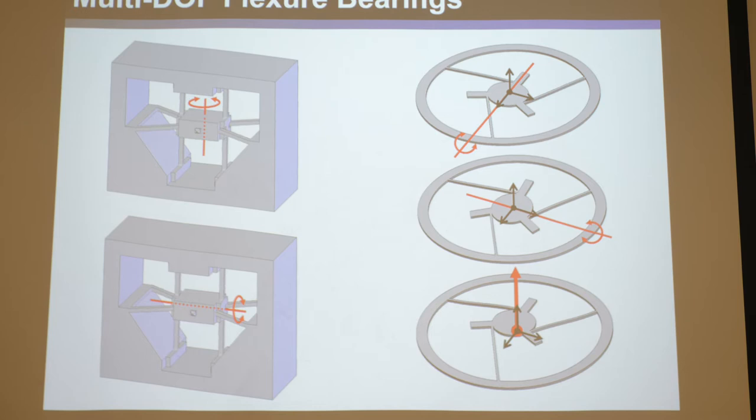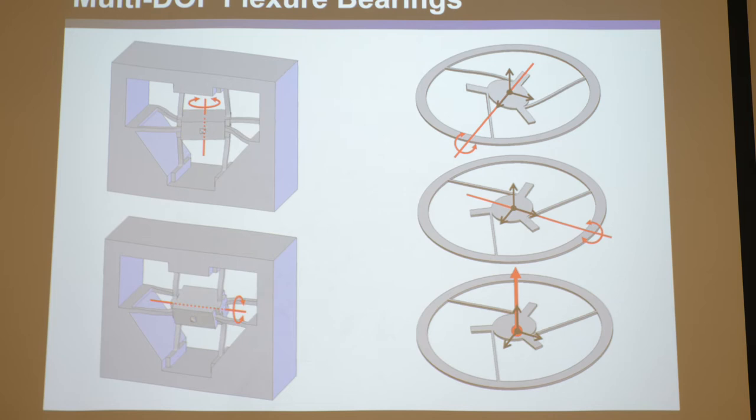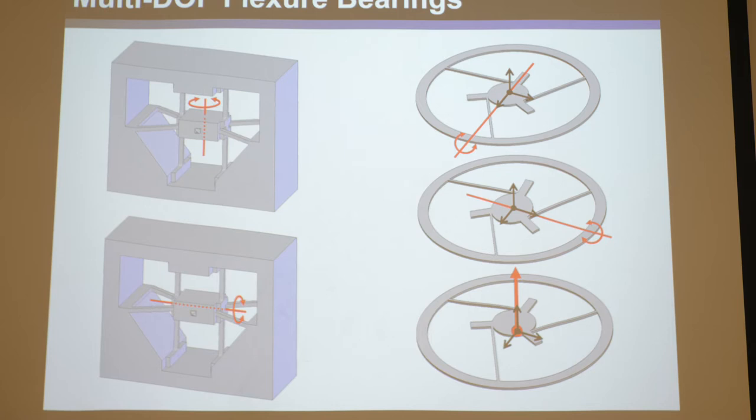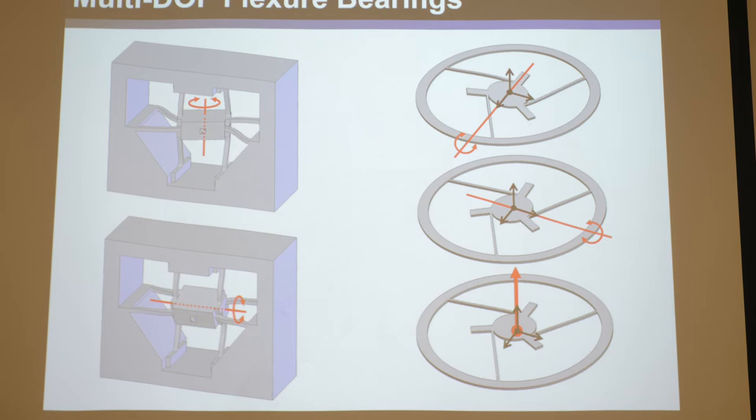Flexures can also achieve multiple degrees of freedom. This flexure achieves tip and tilt - two degrees of freedom. This other flexure achieves three degrees of freedom: rotate around x, rotate around y, and translate in z, while remaining stiff in all other directions. Flexure bearings are far more interesting than traditional bearings because they can achieve many more combinations of degrees of freedom - from zero up to six - whereas rigid bearings are dramatically limited in the combinations of motion they can achieve.